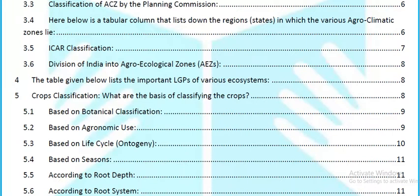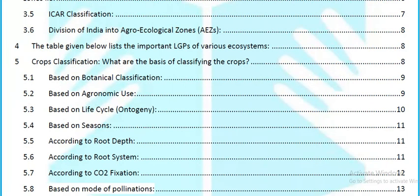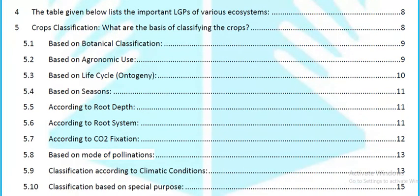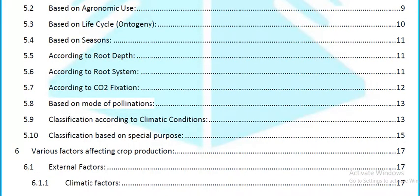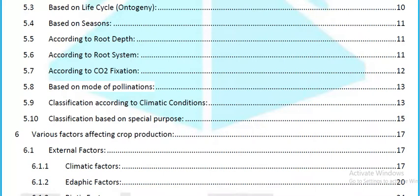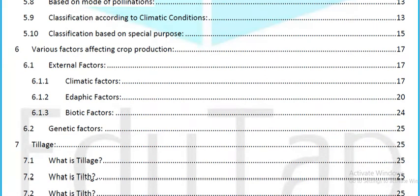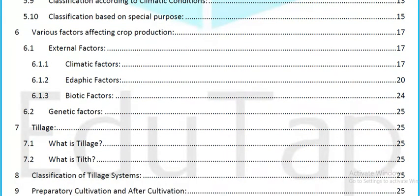The important LGPs of various ecosystems, length of growing periods, and crop classification will be discussed. Crops are classified based on botanical classification, agronomical use, life cycle or ontogeny, based on seasons, according to root depth, based on root system, according to CO2 fixation, mode of pollination, climatic conditions, and special purpose.